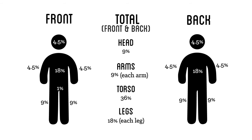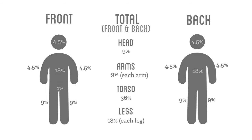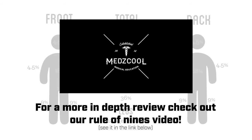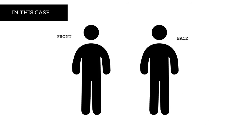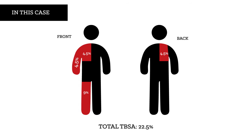Here is a brief overview of the Rule of 9's in an adult patient. In this case, our patient has burns covering 22.5% of his body. That is, 4.5% for his entire right anterior arm, 9% for the right anterior leg, 4.5% for the right upper torso, and another 4.5% for the right upper back. Totaling that up gives a total of 22.5% TBSA.